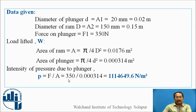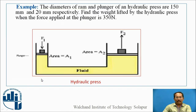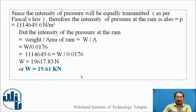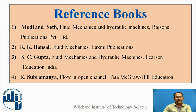Since this is the intensity of pressure, it is transferred through this section. As per Pascal's Law, the intensity of pressure at the ram is also the same. We calculate the intensity of pressure as weight divided by area. Weight is unknown — putting both values and solving, the weight is 19.61 kilo Newtons. Similar problems can be solved from the reference books.